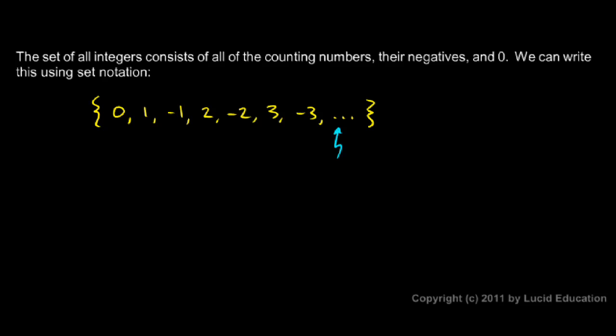Now these three dots here indicate that this pattern continues. We've established a pattern here: 1, negative 1, 2, negative 2, 3, negative 3. After that obviously would follow 4, negative 4, 5, negative 5, and so on, and they would go on indefinitely. But we can't write forever, we can't write all of them, so we just establish the pattern and then put the three dots to indicate that the pattern continues.